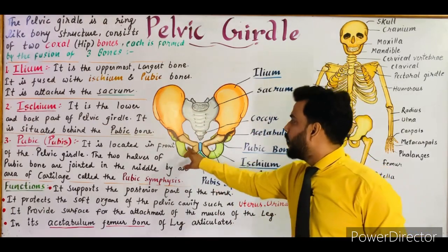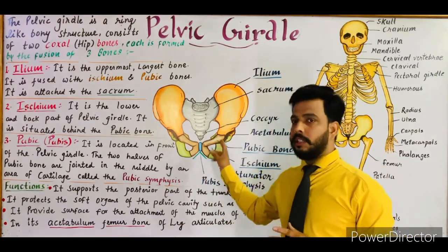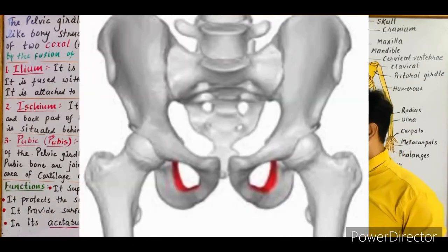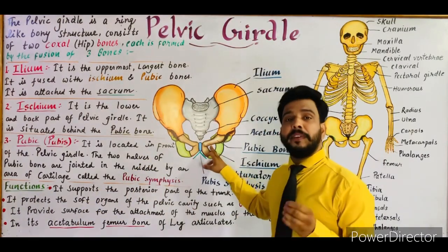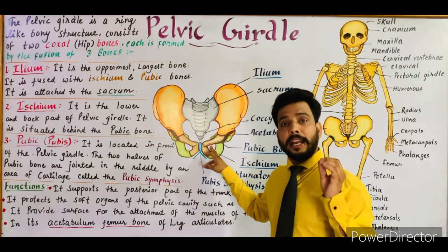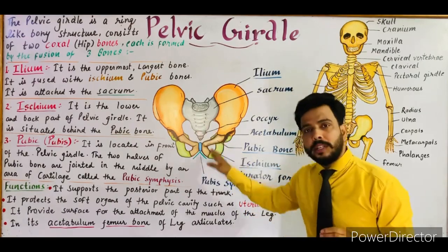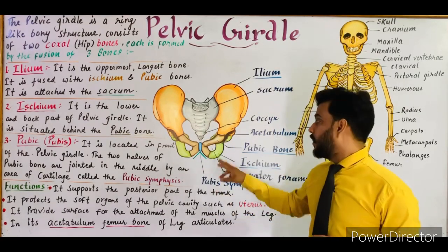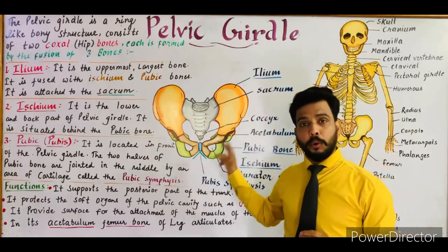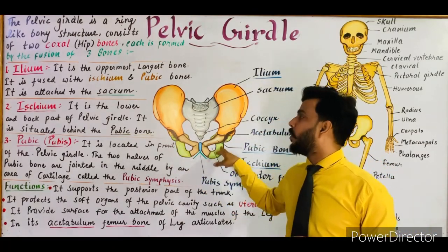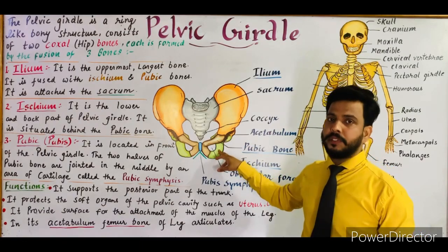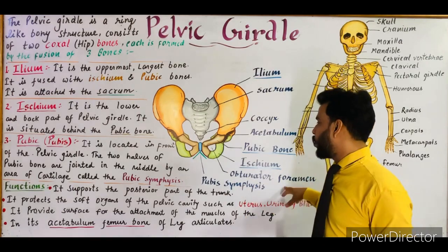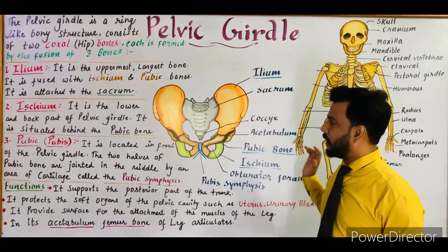The next important structures are two large pores known as the obturator foramen. The obturator foramen are the largest pores of our skeletal system. Different kinds of blood vessels and nerves pass through these obturator foramen to the lower side of the body. These pores are present in the lower side of the pelvic girdle.